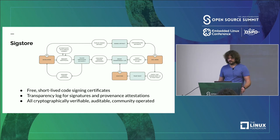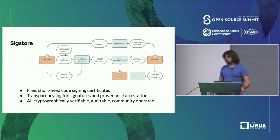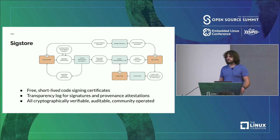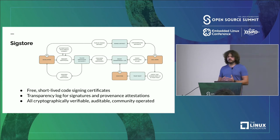The Sigstore project issues code signing certificates for free, just like Let's Encrypt does for HTTPS. The goal is to make it easy to get code signing certificates for free to sign open source artifacts. This is stored with transparency log technology, so you don't have to trust the operators of the project — you can audit them and make sure nothing is deleted or tampered with. We're trusting the operators to keep this up, but not trusting them to not tamper with the data, which is a nice hack to have a central place all of us can be found and queried.